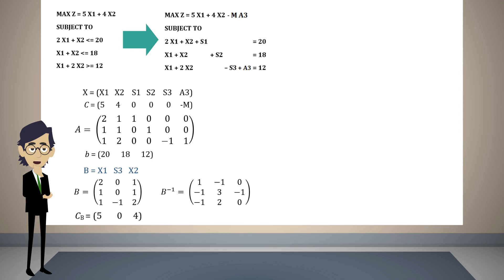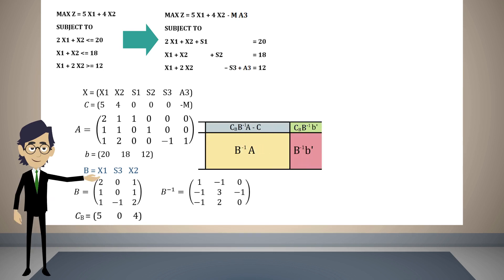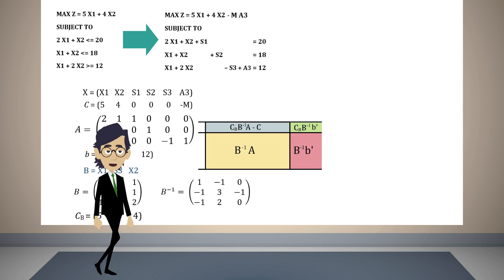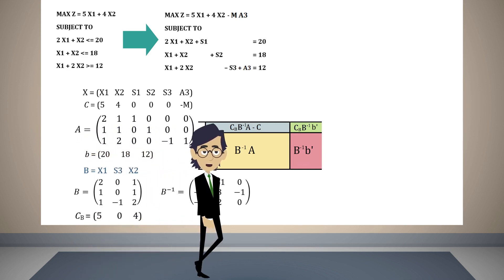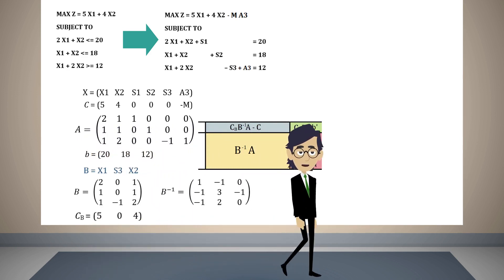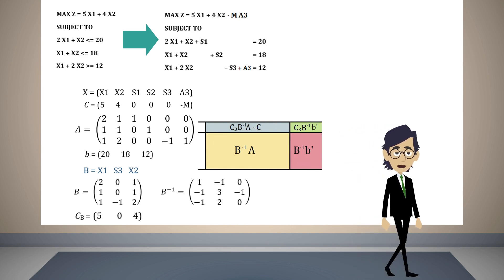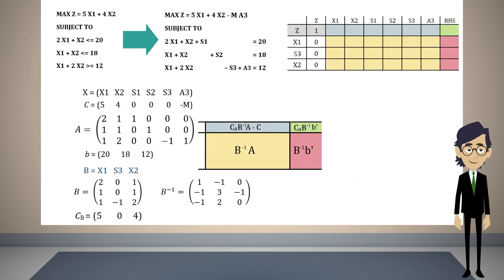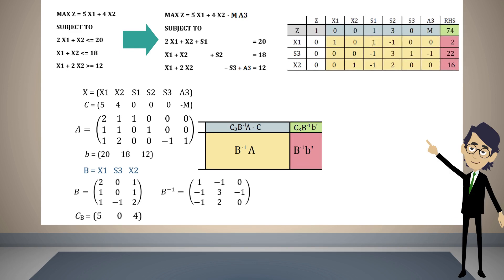Now let us recall that the tabular representation of the simplex is as follows: if we know the variables in the solution and we perform these matrix operations, then we can fill the last table of the simplex method. When we do these operations, the simplex table will be transformed into the following table.